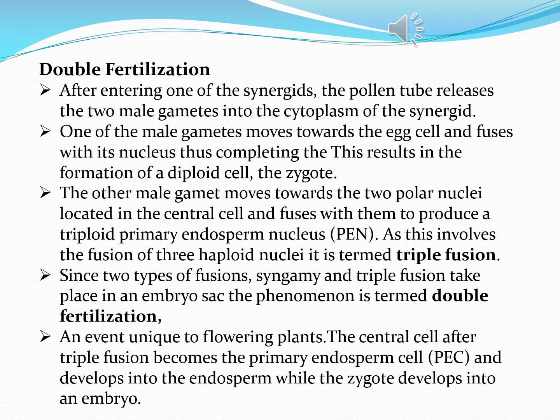There are two types of fusions: one is syngamy and one is triple fusion. Since two fusions occur, this phenomenon is termed double fertilization. This event is unique to flowering plants. After triple fusion, the central cell becomes the primary endosperm cell (PEN) and later develops into endosperm, while the zygote develops into the embryo.